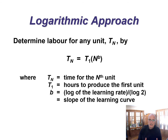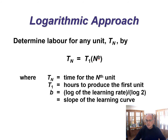The logarithmic approach is the approach that lets you calculate it for any unit. For the logarithmic approach, the time for the nth unit equals the time for the first unit times n to the exponent b. And b is the log of the learning rate divided by log two. It is a coefficient you need to calculate — a little more work than the arithmetic approach, but it allows you to do numbers that aren't on that doubling path.